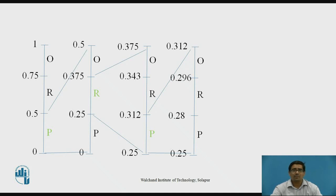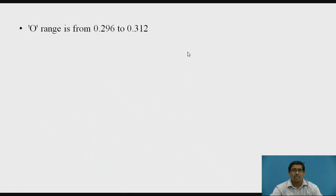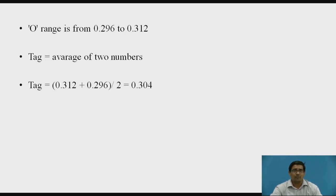After that, the last symbol is O. Since the last word in the message is O, you don't need to subdivide the O symbol again. You simply calculate the tag. For the tag, you remember the range of the last symbol. Here, the last symbol is O, with range 0.296 to 0.312. Therefore, the tag is the average of the two numbers: (0.312 + 0.296) / 2 = 0.304.